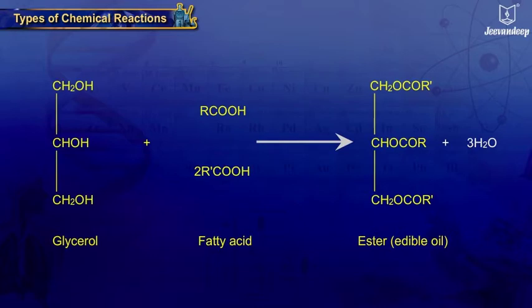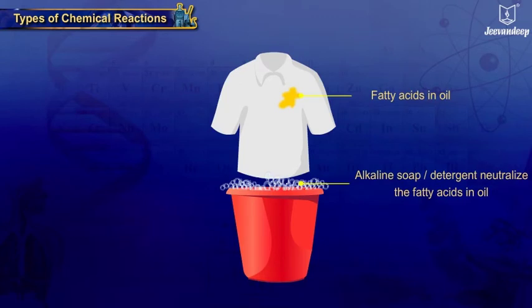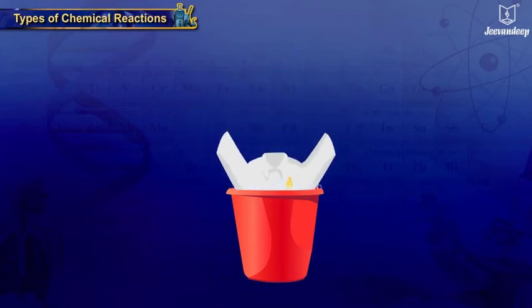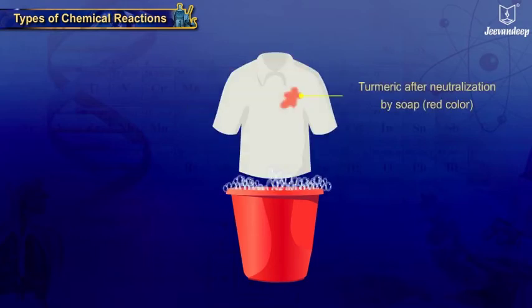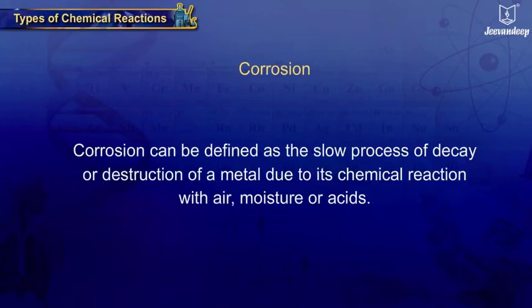These acids in oil are neutralized by alkaline soap or detergents, and this reaction is indicated by turmeric — the yellow color present in food — which turns red in color.